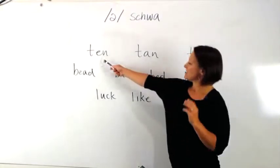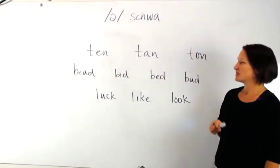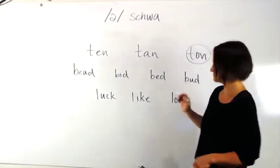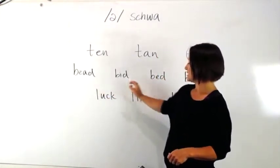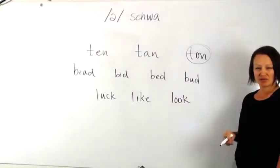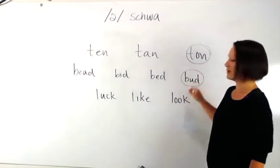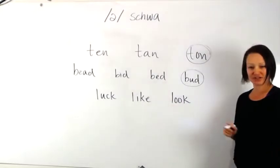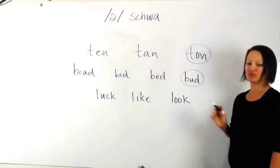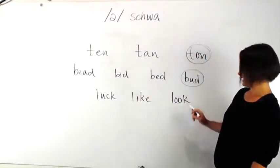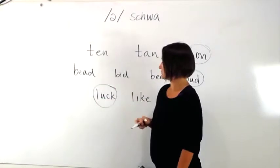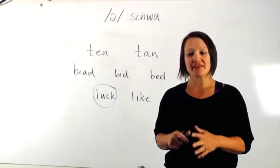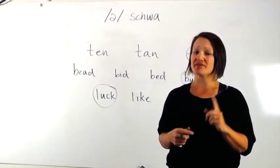So we have ten, tan, ton. Now we're listening for the uh sound. Ten, tan, ton. Right here. Ton. Bead, bid, bed, and bud. Where do you hear that sound? The uh sound. Bud, right? Good. Next, we have luck, like, and look. All very similar sounding words. These are called minimal pairs. Luck, like, and look. Here's that uh sound. So first start to recognize the sound within a word, and then start practicing longer words that have the schwa sound in them, and many of them do in English. After that, start to practice longer phrases and then sentences that contain the schwa sound.